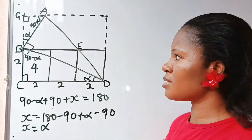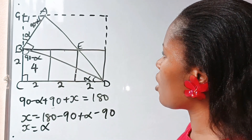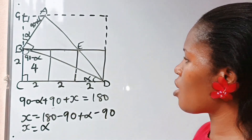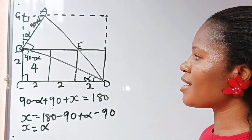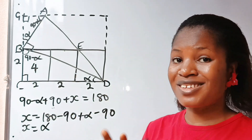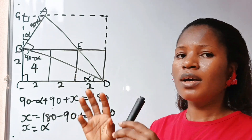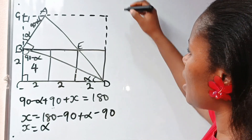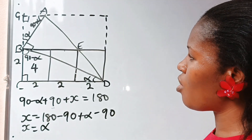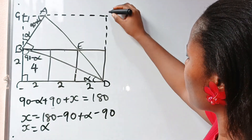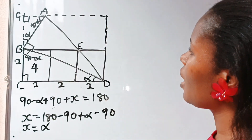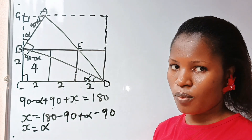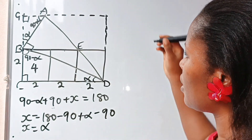Now I want you to look at triangle AGB and triangle BCD. You can see that they share the same angles — they are similar triangles. Because they are similar, the ratio of their corresponding sides are equal.